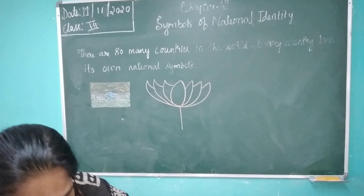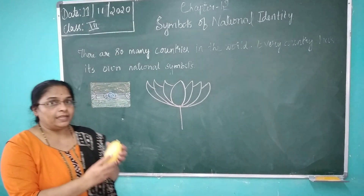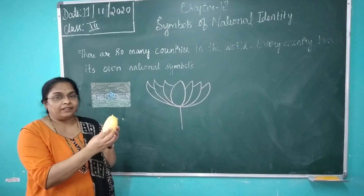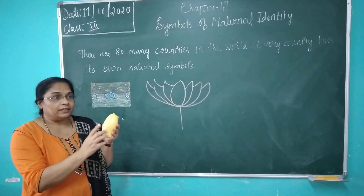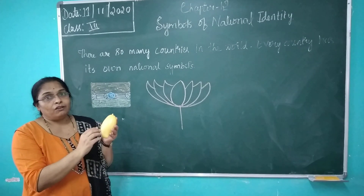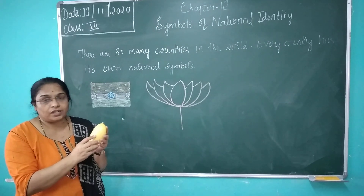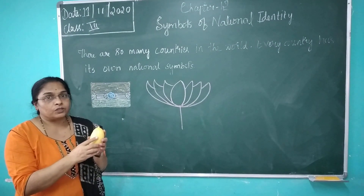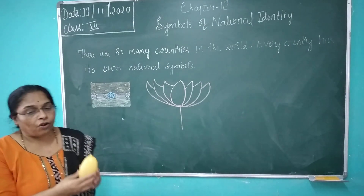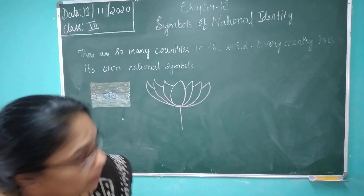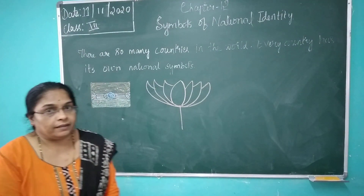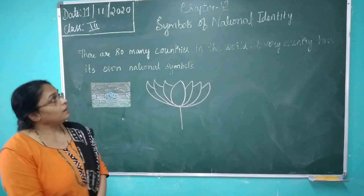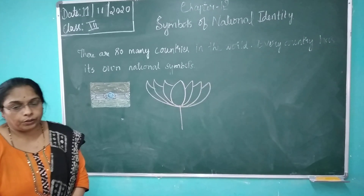Next is the national fruit, that is the mango. Children, you love it — it is a very delicious and very sweet fruit. So these are the symbols of national identity. This is all about national identity, children. Thank you.